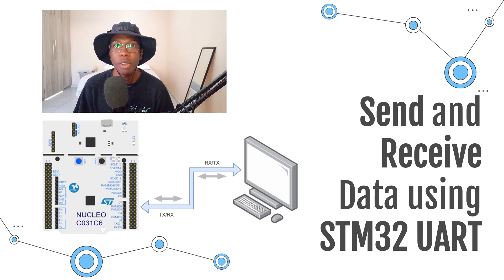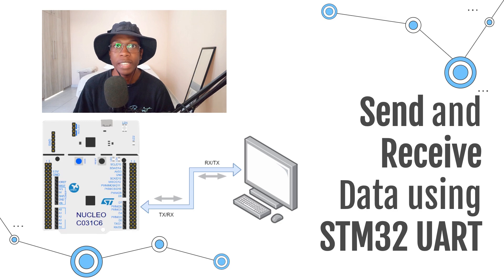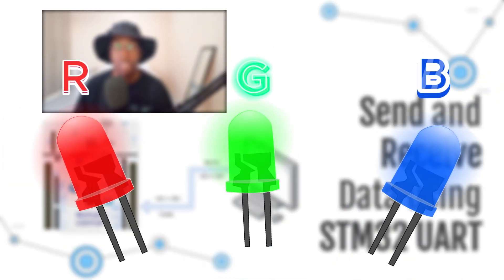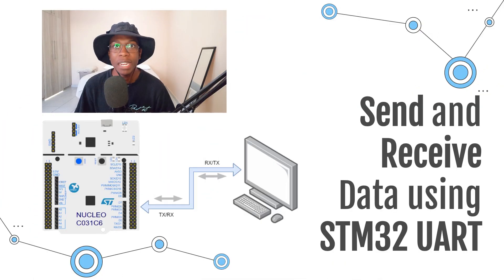To make things more interesting and to demonstrate how UART works, we are going to create a project where we can control the color of an RGB LED by typing the letters R, G, or B into the computer. My name is Ali and you are watching CGHQ.